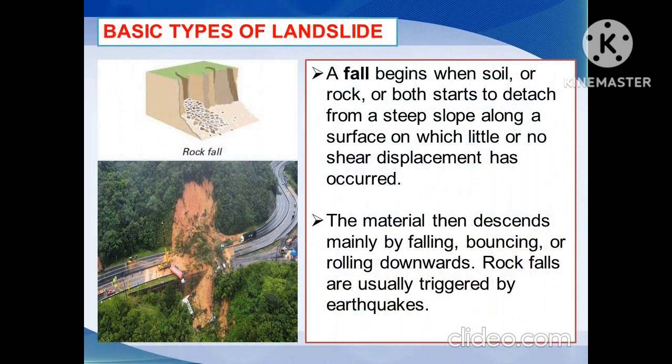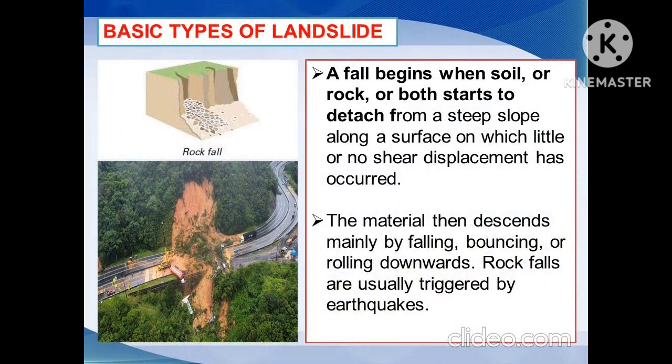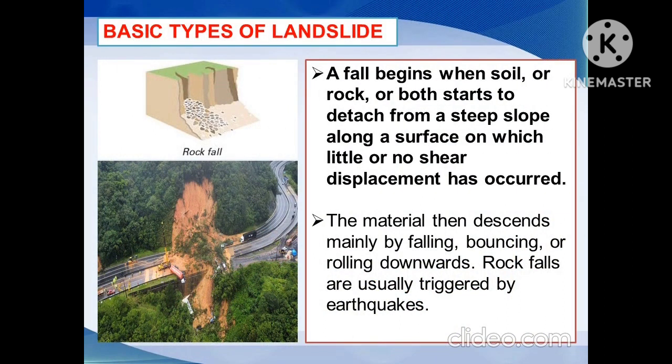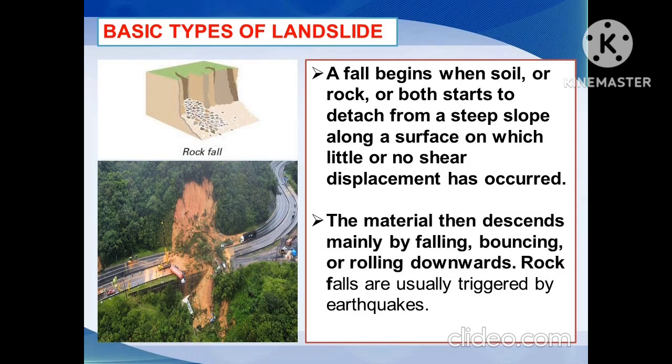The following are the basic types of landslide. A fall begins when soil, rock, or both starts to detach from a steep slope along a surface on which little or no shear displacement has occurred. The material then descends mainly by falling, bouncing, or rolling downwards. Rock falls are usually triggered by earthquakes.